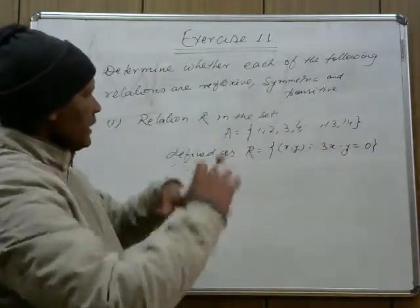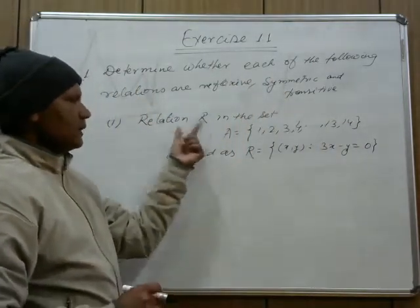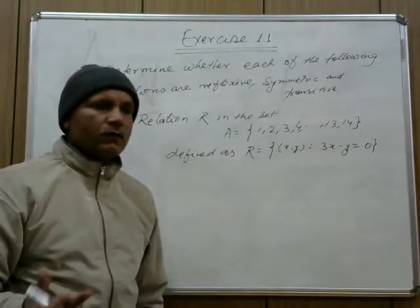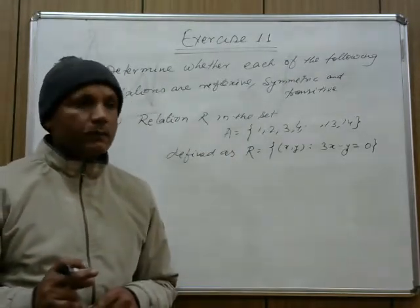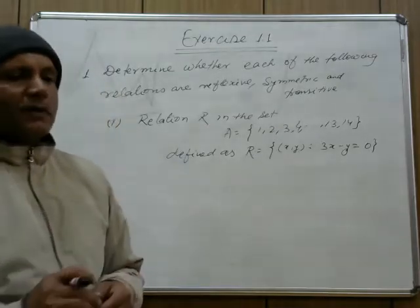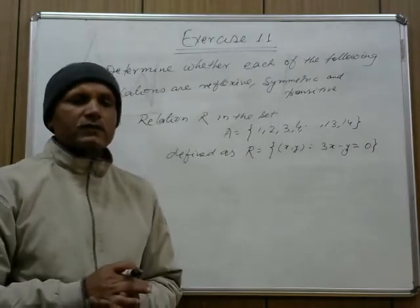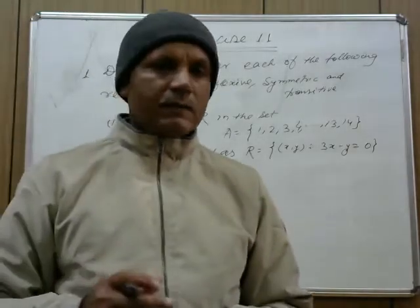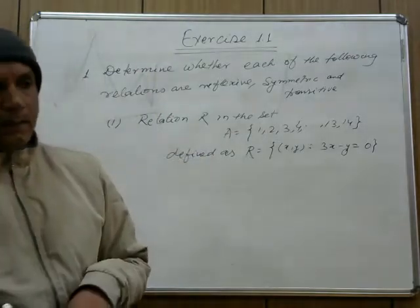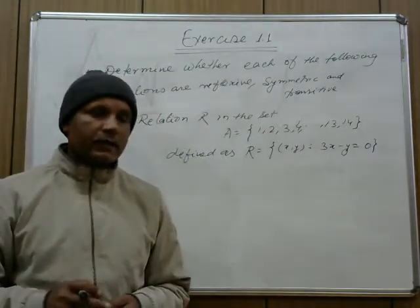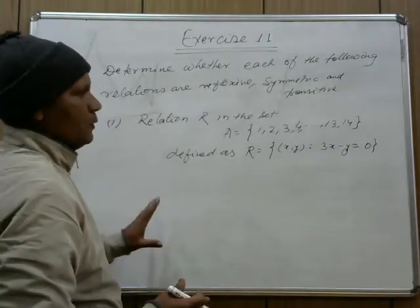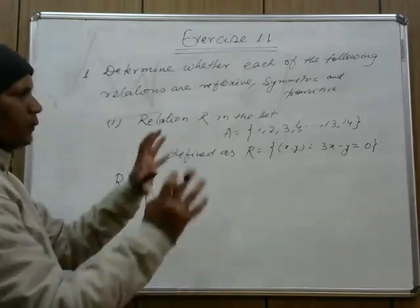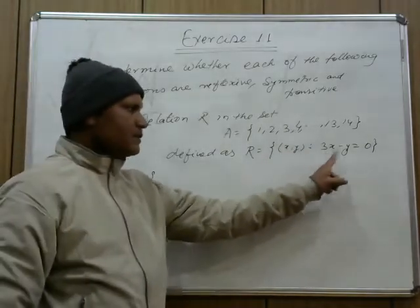We have to check whether this relation R is reflexive, symmetric, or transitive. For reflexive, each member should be related to itself. For symmetric, A related to B implies B related to A. For transitive, A related to B and B related to C implies A related to C. Now, let us find all ordered pairs satisfying 3x − y = 0.